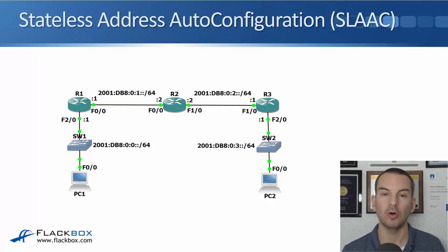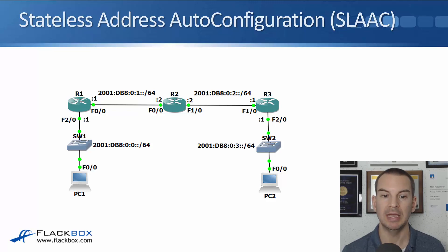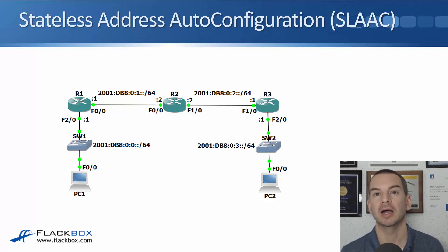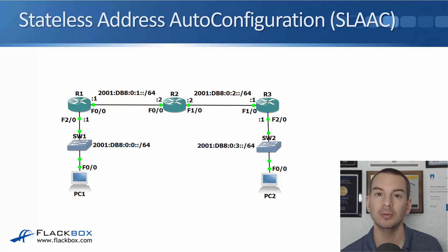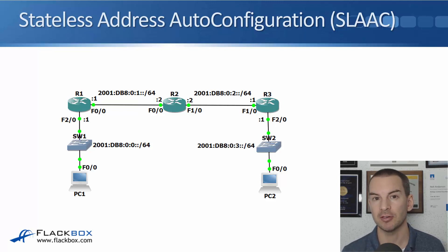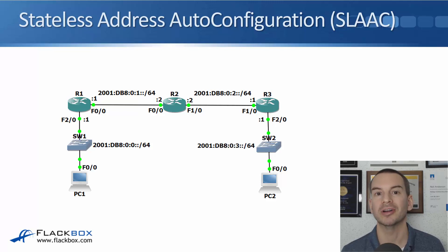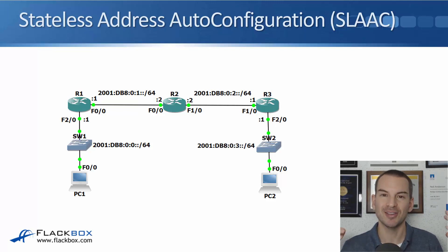The router will also tell PC1 that it is 2001:db8:0:0::1 — use me as your default gateway. So when you first see this, you think SLAAC is a brilliant idea. It means that we don't have to use DHCP anymore, so it's one less thing that can go wrong. We don't need the DHCP server, we don't need to configure it, and it's a bit more efficient because it's stateless as well.